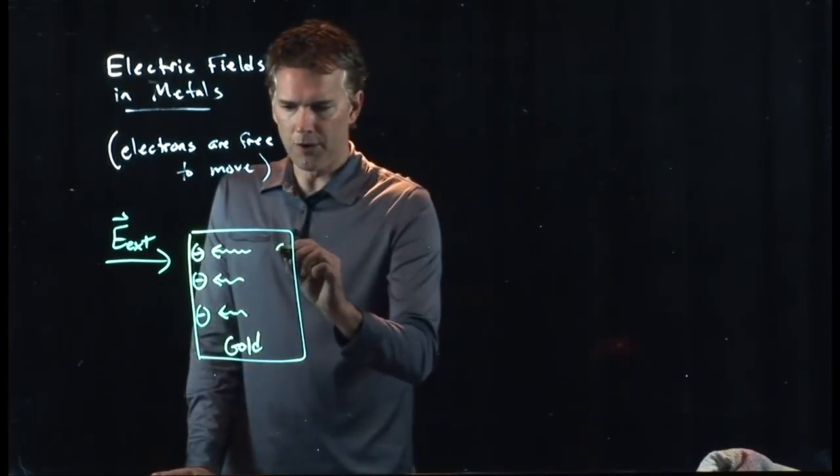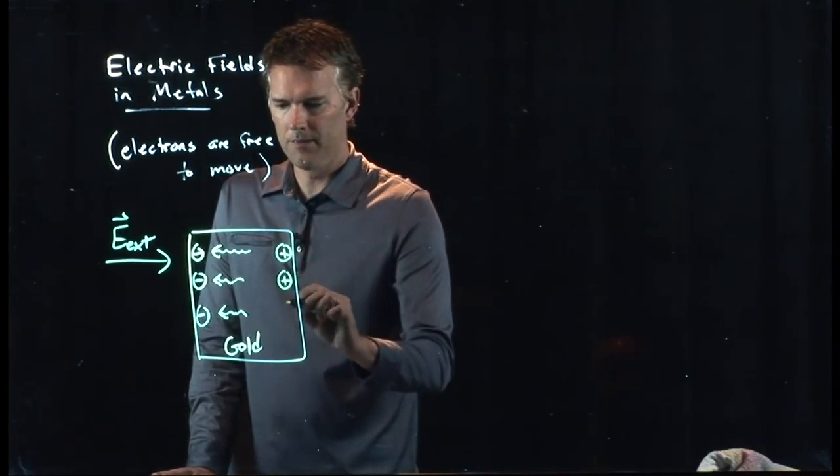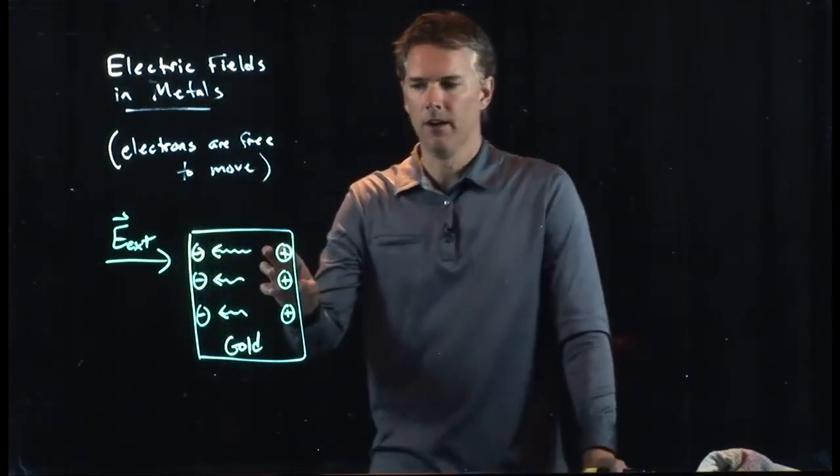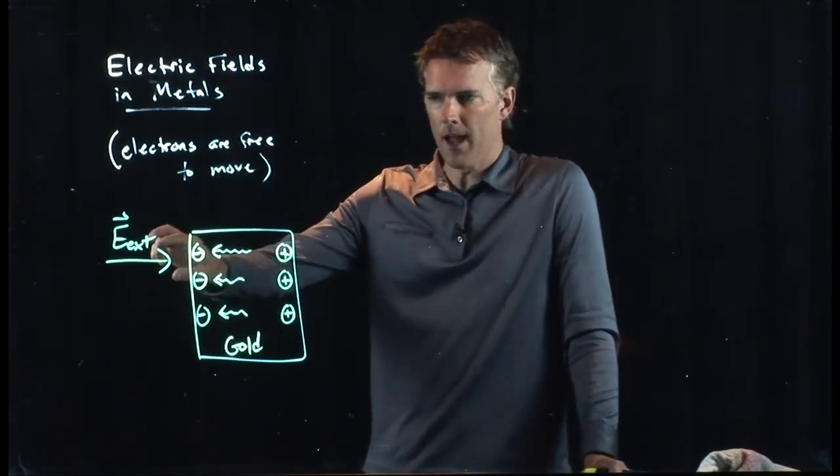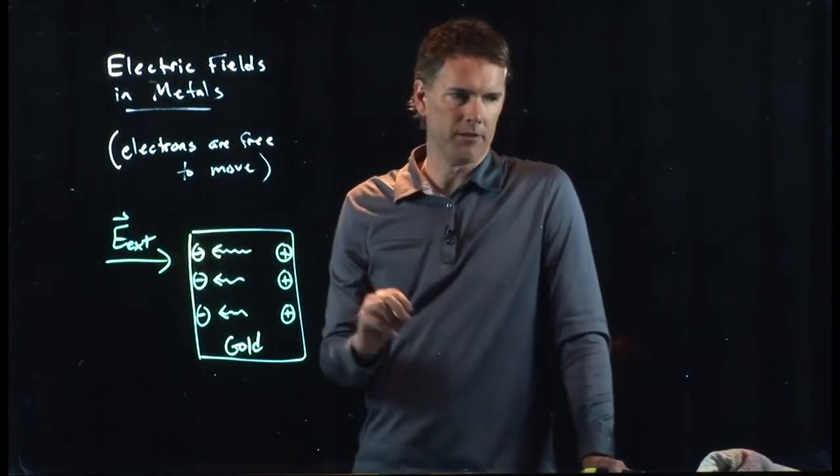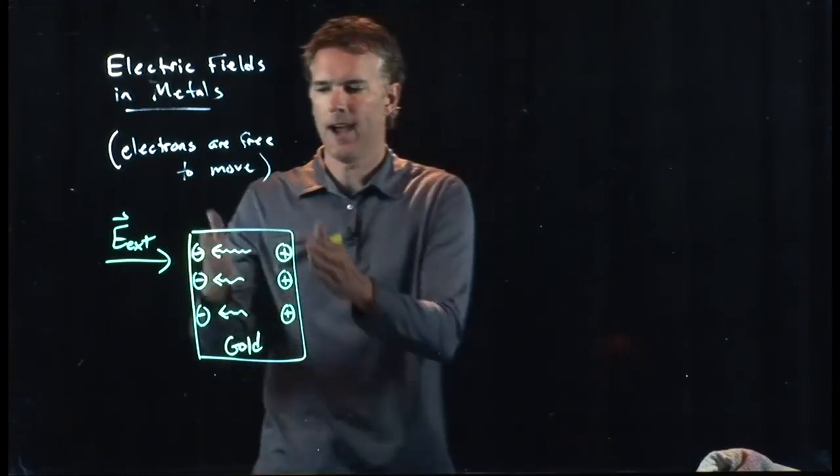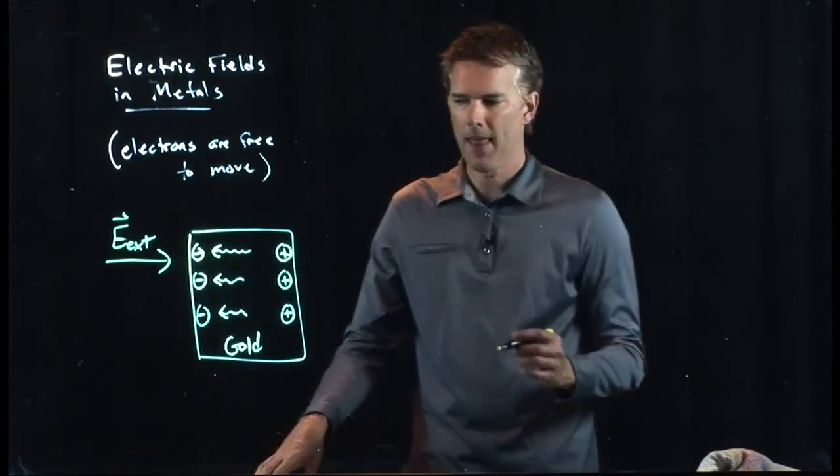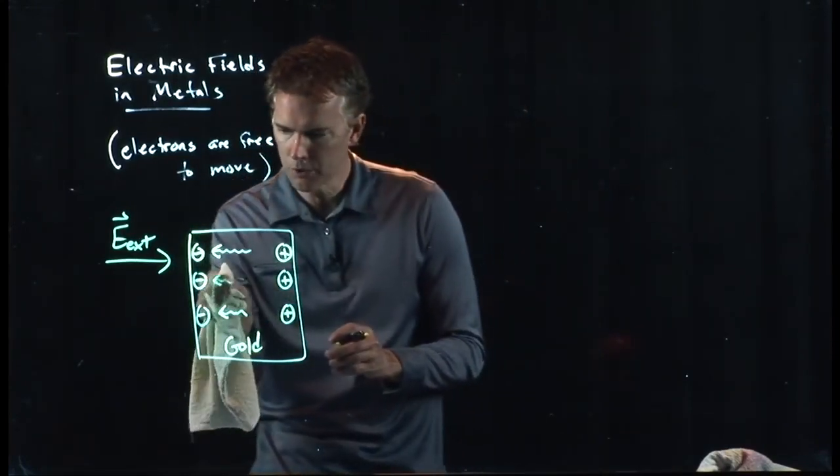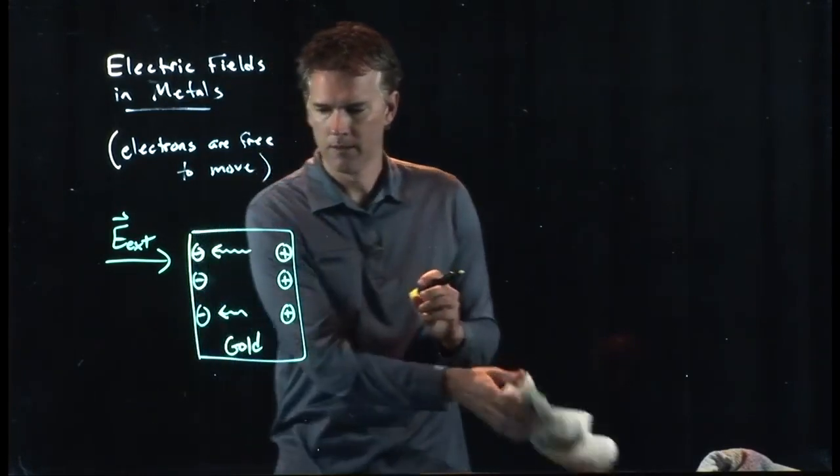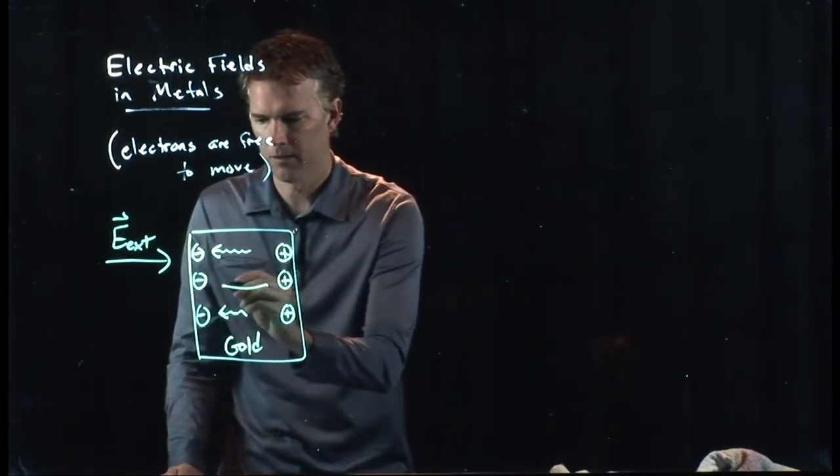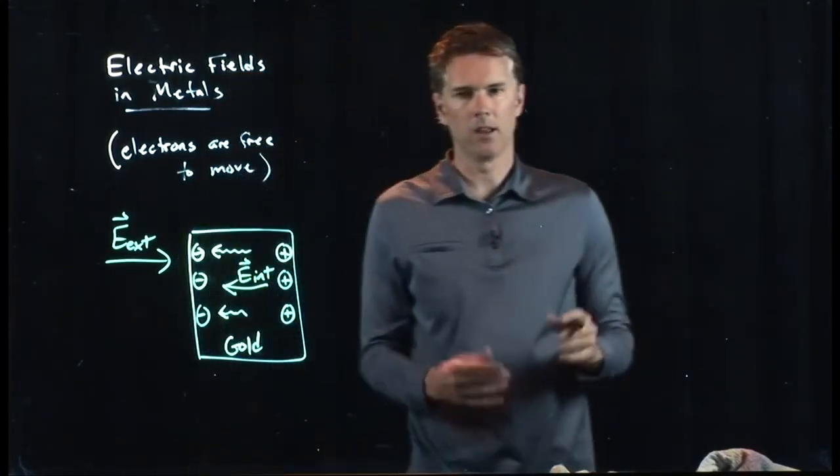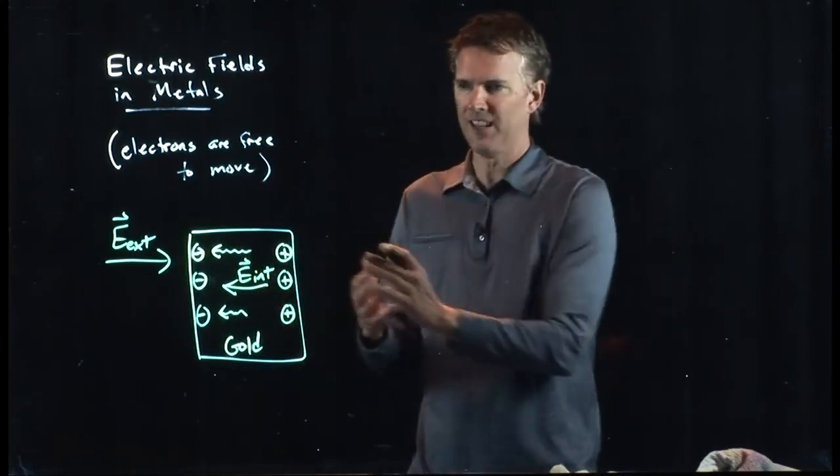The positive charges that are left over here are missing an electron. You've got a nucleus there, and one of its electrons migrated away, so it's a net positive charge. And so now you have positive charge on the right, negative charge on the left, and that means there has to be an internal field that looks like this. And there is some field that develops in the material.